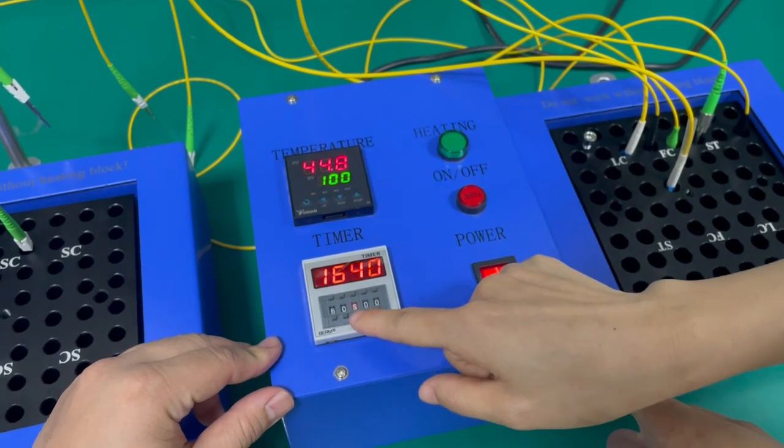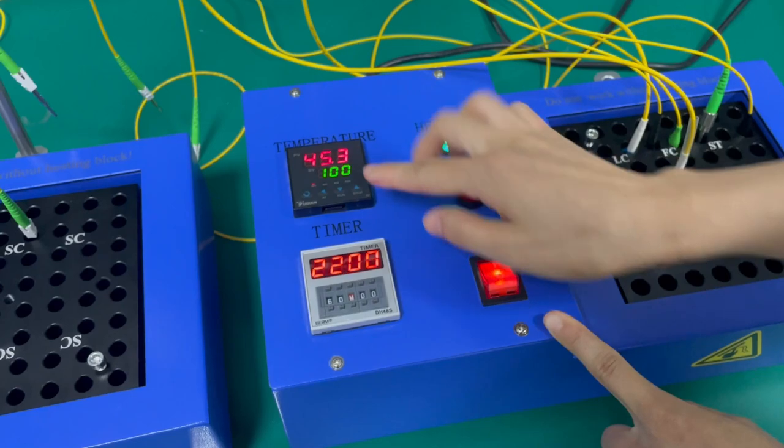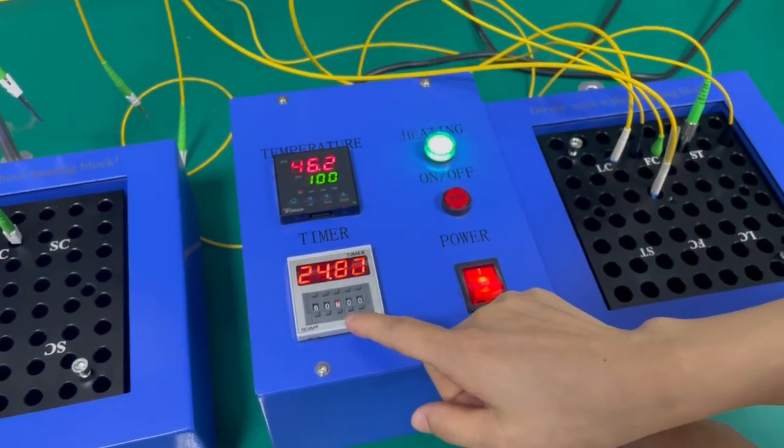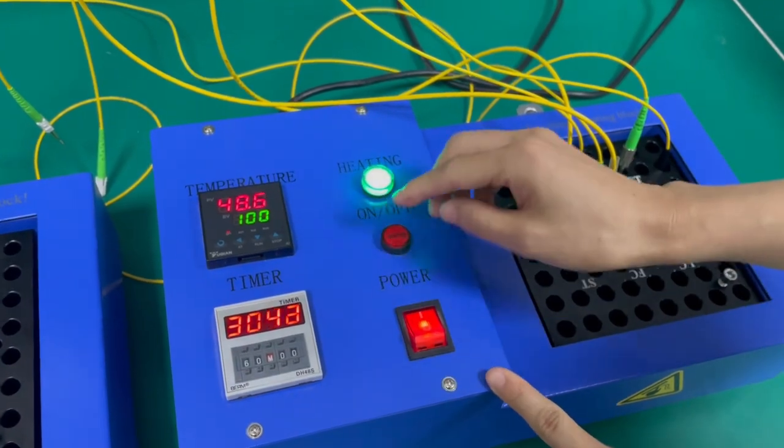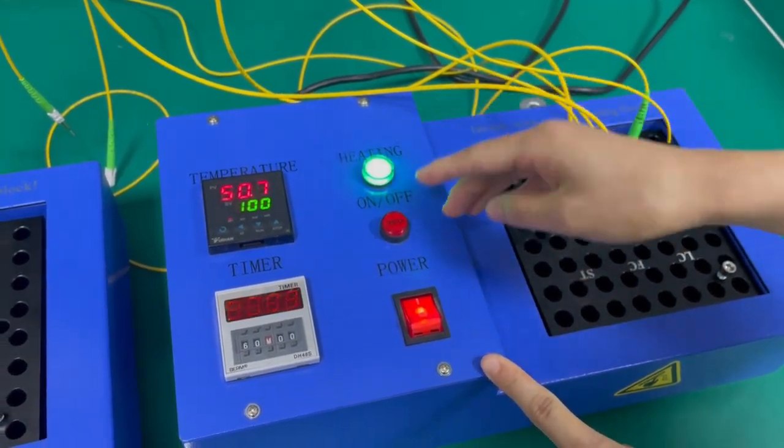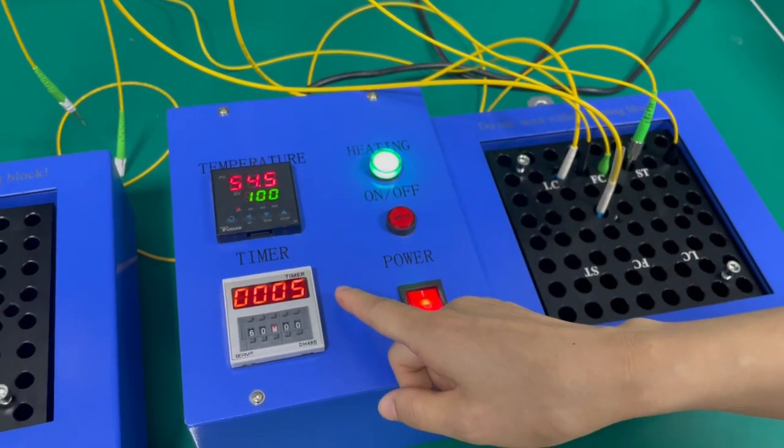This is the two settings. This is the minutes. Normally we are setting 100 degrees and 20 minutes. When you finish the setting, temperature and time, you press this button. This button is a timer counting function.